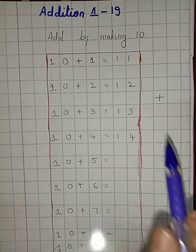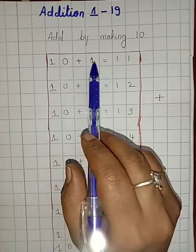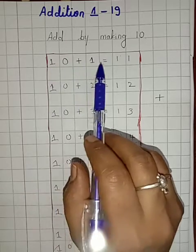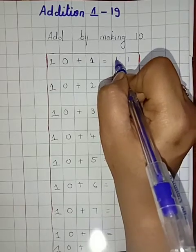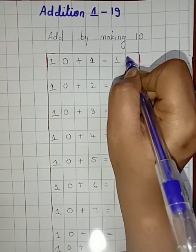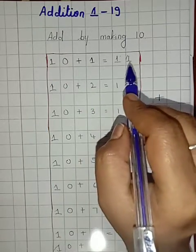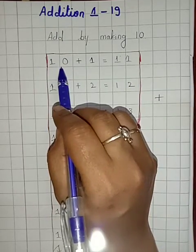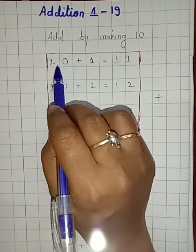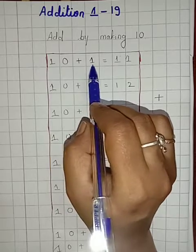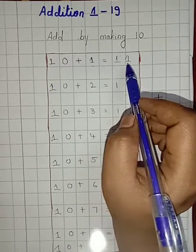Example, now when you add 10 plus 1, there is 1 ten and 1 one. So what will be the value, children? That is 11. You all can see. So this is 11. It has become so easy because they have separated the 10s and the 1s. So 1 ten and 1 one is equals to 11.